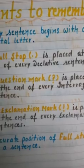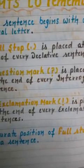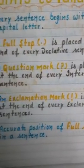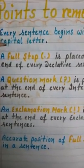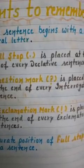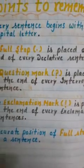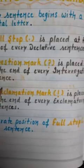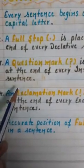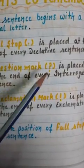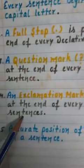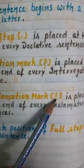Now, some points to remember when writing sentences. Every sentence begins with a capital letter. A full stop is placed at the end of every declarative sentence. A question mark is placed at the end of every interrogative sentence. An exclamation mark is placed at the end of every exclamatory sentence.